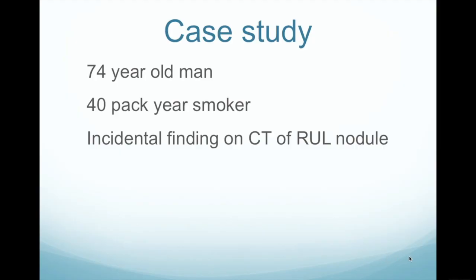Now I'm going to show you a few slides and use a case study to demonstrate how radial EBUS works and how it allows us to biopsy lesions in the lung. Here's a case study of a 74-year-old man who had a history of 40 pack-years smoking, and there was an incidental finding on a CT scan of the chest of a right upper lobe nodule. This is a common situation where a CT scan is done for another reason and there's an incidental finding of a nodule.